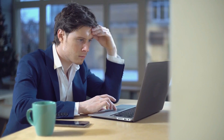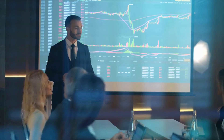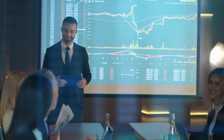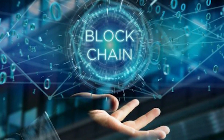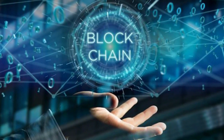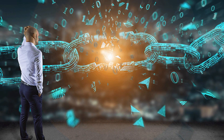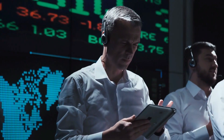When that happens, miners are said to have found the golden nonce, and their block is added to the chain. Making a change to any block earlier in the chain requires re-mining not just that block, but all of the blocks that come after — this is why it's extremely difficult to manipulate blockchain technology. Finding golden nonces requires an enormous amount of time and computing power. When a block is successfully mined, the change is accepted by all nodes on the network and the miner is rewarded financially.